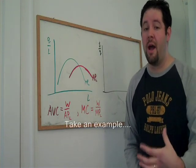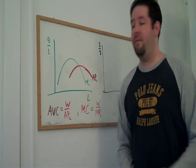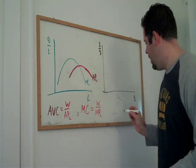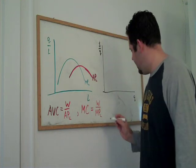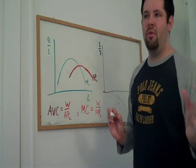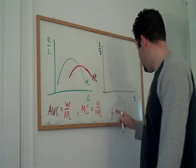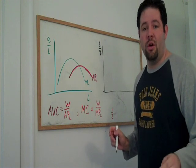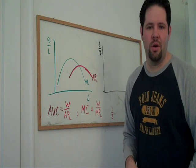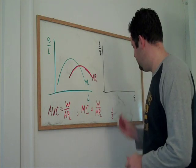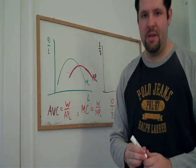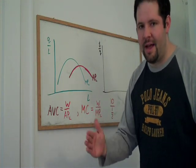If we need two worker hours to produce one unit of output, that would mean our marginal product of labor is one half. Each additional worker produces one half of a unit of output. If we pay each worker ten dollars per hour, how much does it cost to produce that last unit of output?